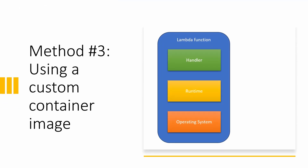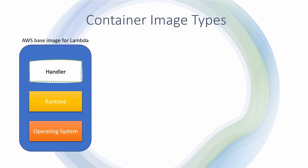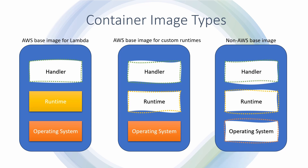Method number three: using a container image. A developer creates a container image that includes the operating system, a runtime, and a handler. A container image can be created using one of three image types. First, AWS base image for Lambda — these images include the operating system and the runtime, so the developer is only responsible for implementing the handler. AWS provides tools for some languages that automate building such images. Second, AWS base image for custom runtimes — based on Amazon Linux, the developer adds the runtime and implements the handler. Third, a non-AWS base image — the developer chooses the operating system, adds the runtime, and implements the handler.